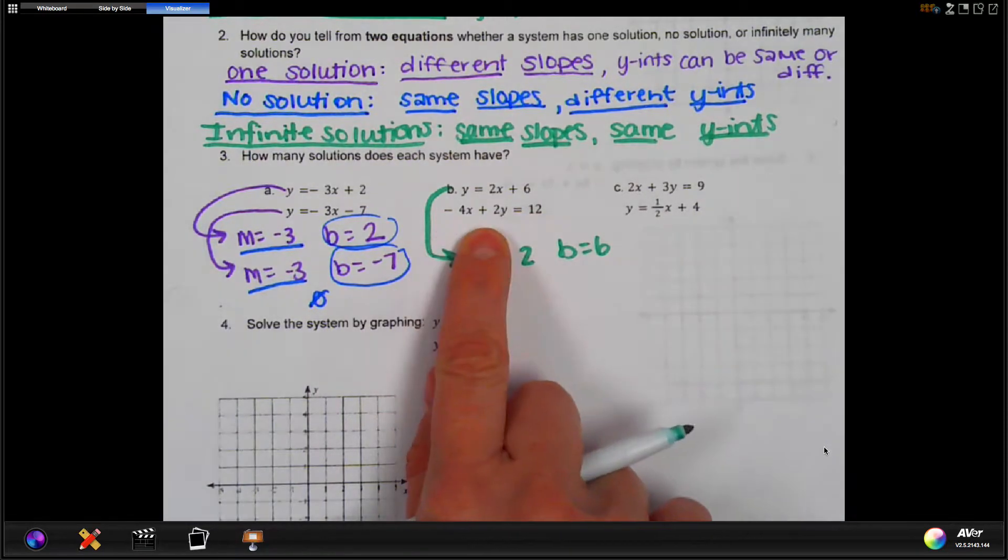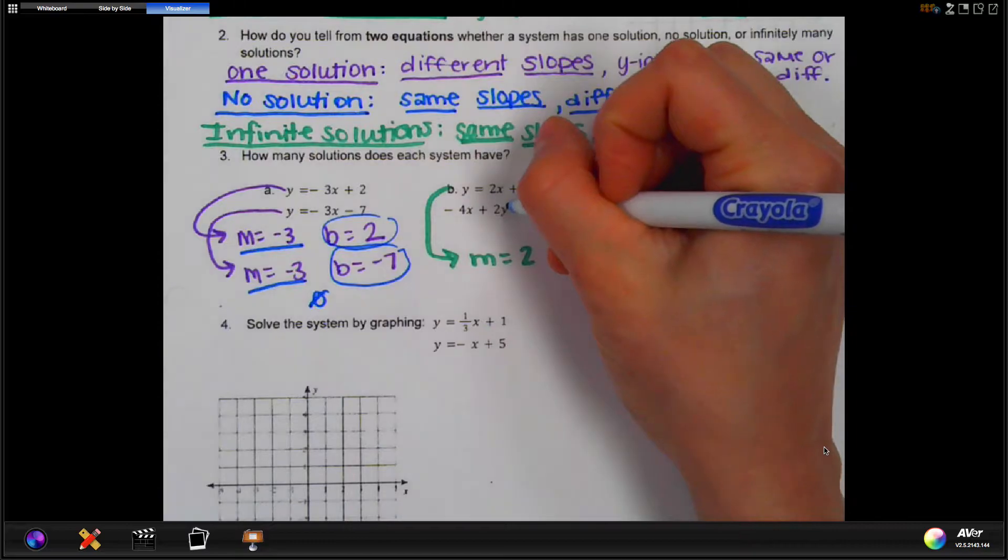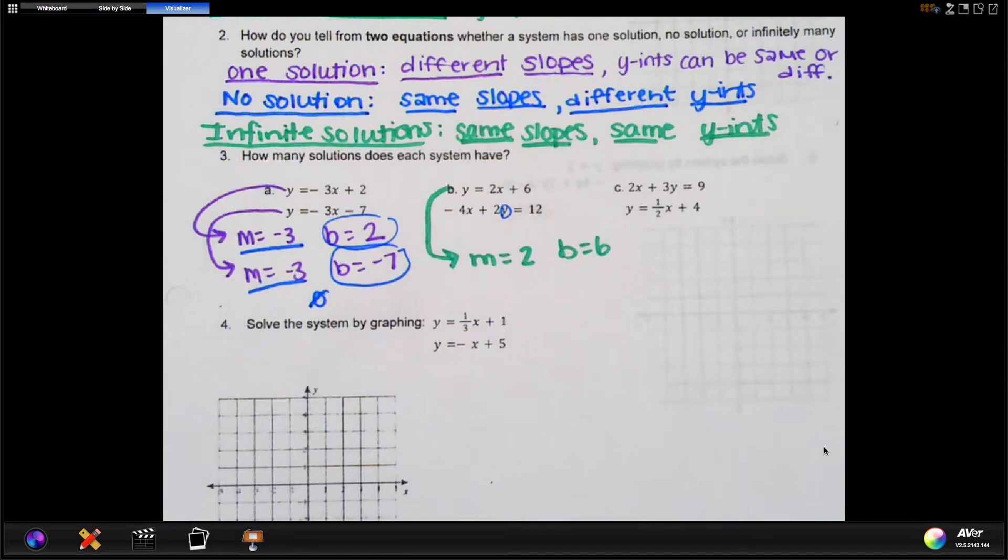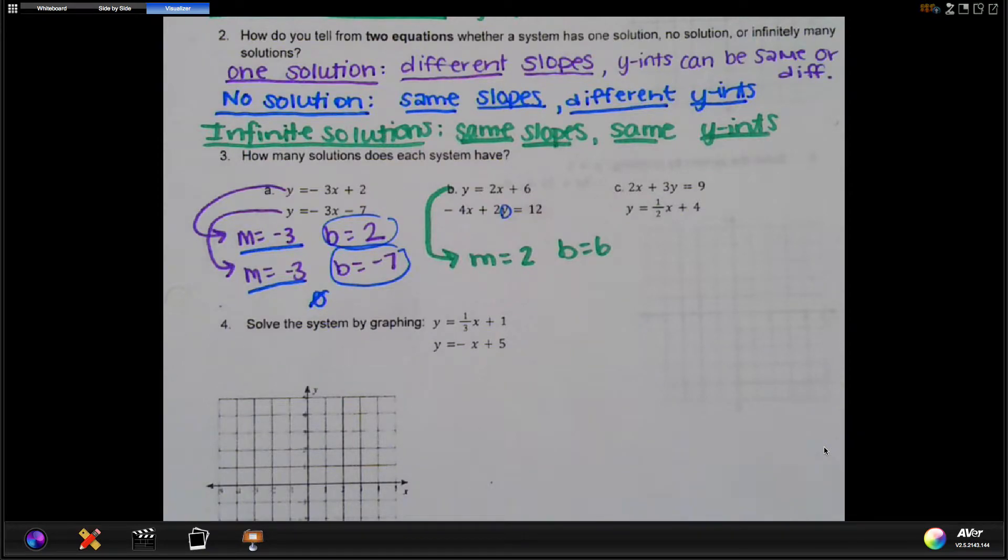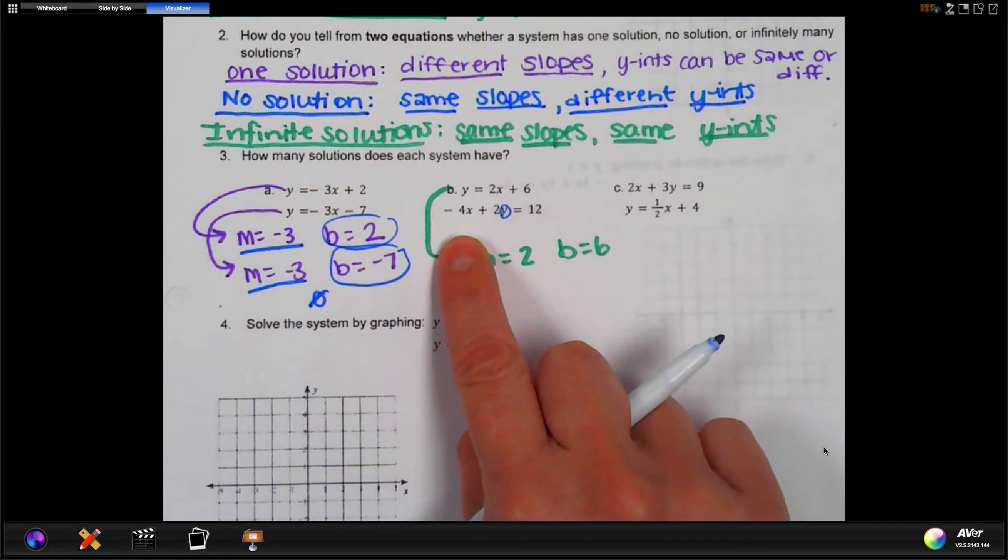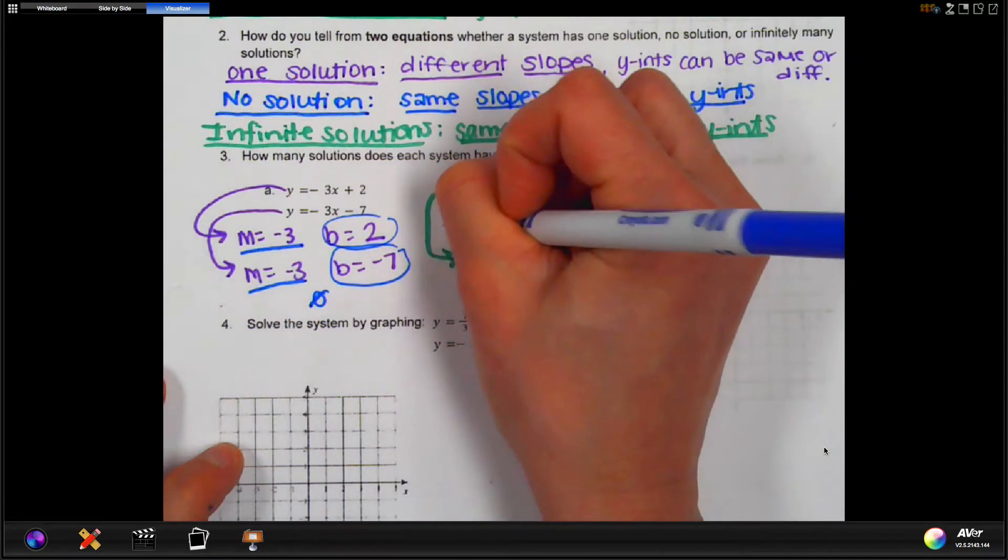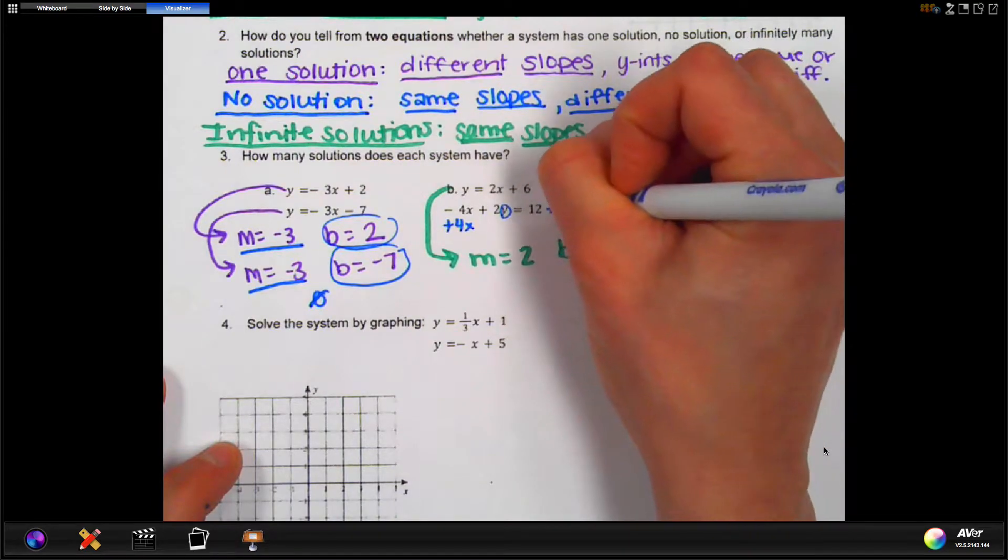The second one, though, is not in y equals format. So you have to start by getting it in y equals. Remember, to do that, this y is going to stay right there. It's claiming the left side of the equation. So we need to move everything else to the right side of the equal sign. So 12 is already there. I'm going to begin by removing the negative 4x. So the opposite of negative 4x is to add 4x, add 4x over here.